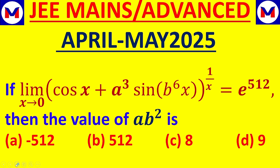JEE Mains advanced problem series. A limit related problem. If limit x tends to 0, cos x plus a cube sin b to the power 6x, whole to the power 1 by x equals e to the power 512, then the value of ab square is.